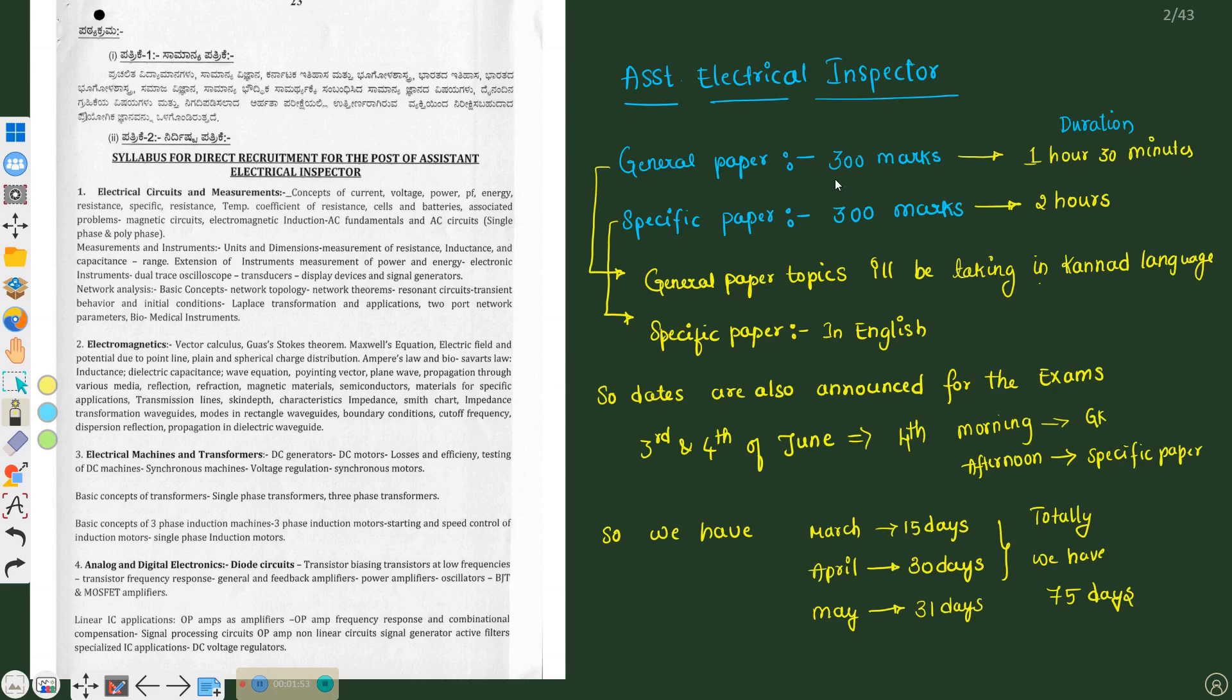The papers coming in the exam are general paper and specific paper, and there will be one-fourth negative marking. For general paper we will be having 300 marks and the duration is 1 hour 30 minutes. 300 marks for specific paper, that is Electrical and Electronics Engineering, and the time assigned is 2 hours. If you talk about the general paper topics, I will be taking in Kannada language, and the specific paper, Electrical Engineering, I will take in English.